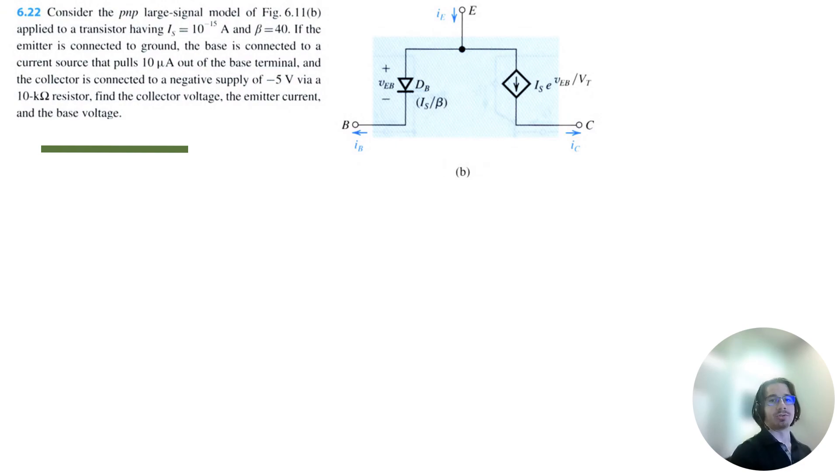Let's solve problem 6.22 from Macroelectronics Circuits 8th edition by Cedron Smith. We want to consider the PMP-Large cycle model, which I've pasted there. And it's going to be applied to a transistor having I sub s equals 10 to the negative 15 amps and beta equals 40.